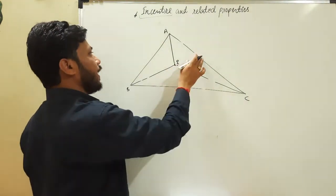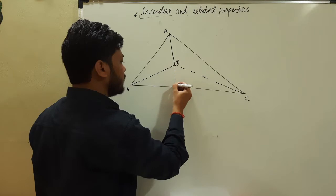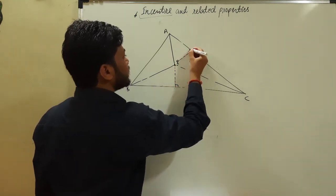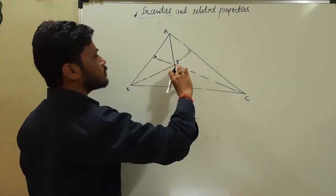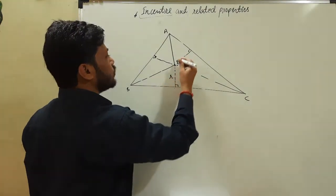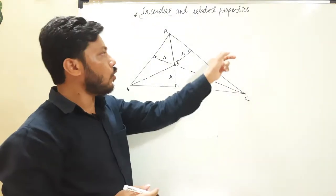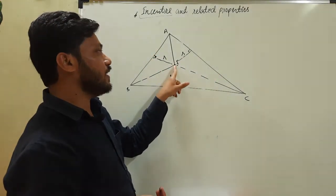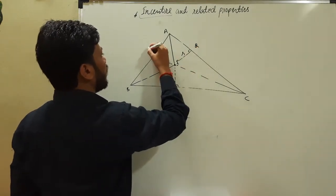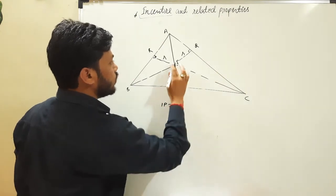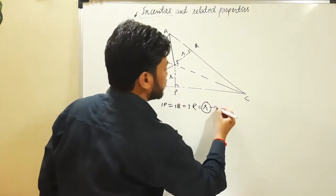If we draw a perpendicular to any of the three sides from the incenter — suppose we draw a perpendicular on side BC, or on side AC, or on side AB — the lengths of all these perpendiculars are the same, and this length is denoted by r. So we can say: IP equals IQ equals IR equals r. The incenter is equidistant from all three sides of the triangle.